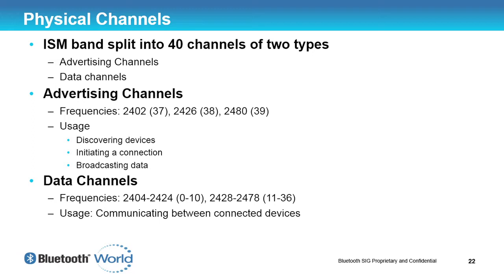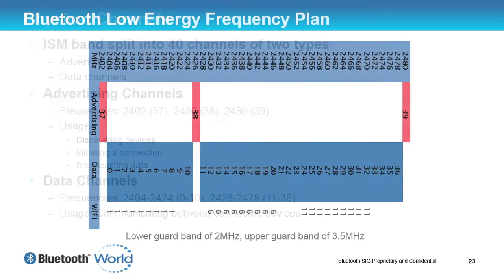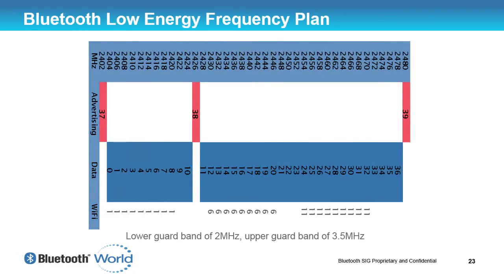The data channels are used to transfer data — a larger amount of data than just a few bytes of advertising data. If you look at this from a frequency plan point of view, you can see the three advertising channels indicated in red, and the 37 data channels indicated in blue.